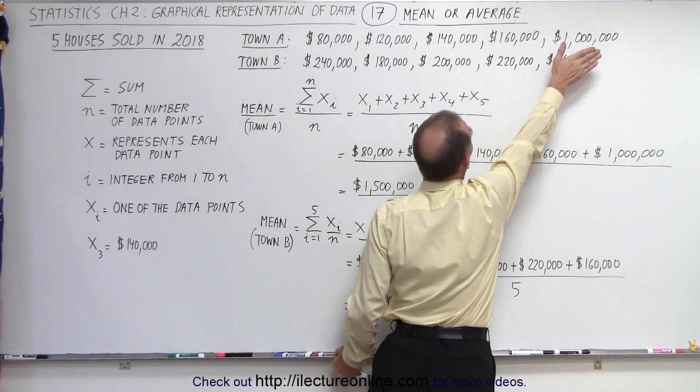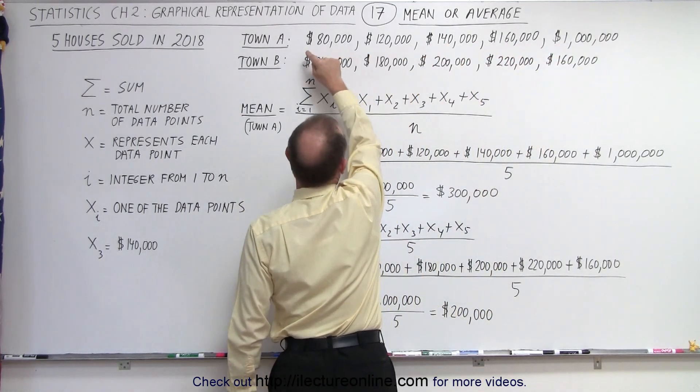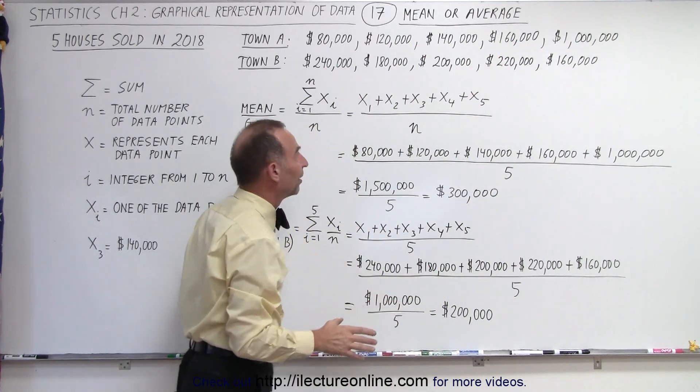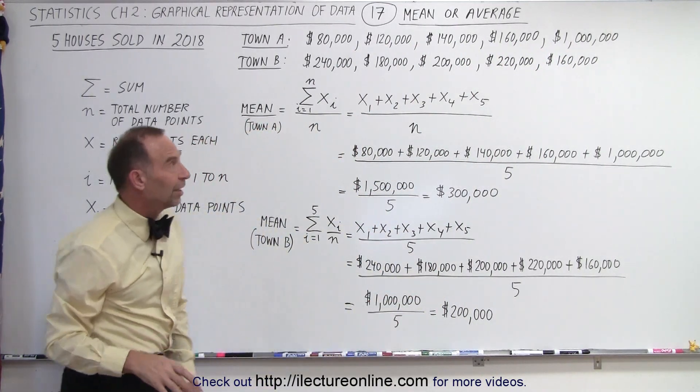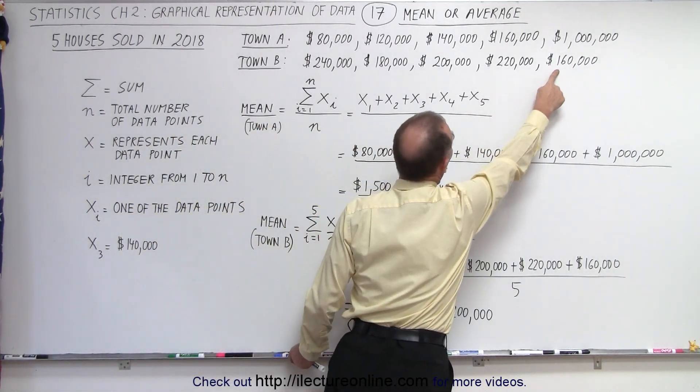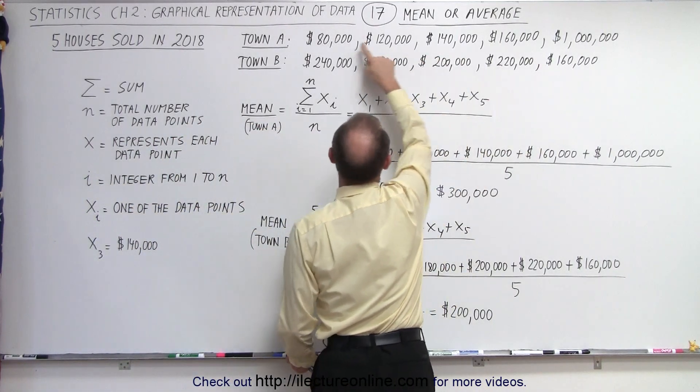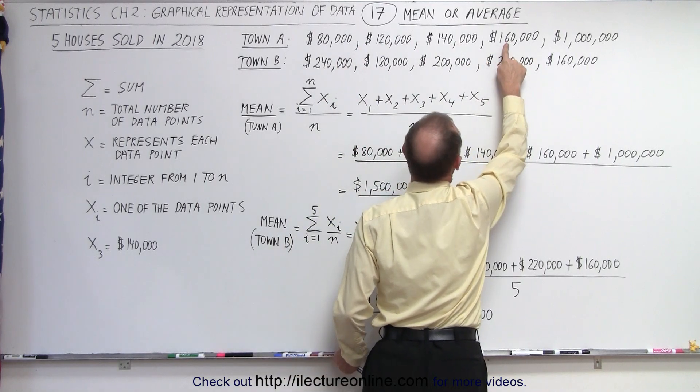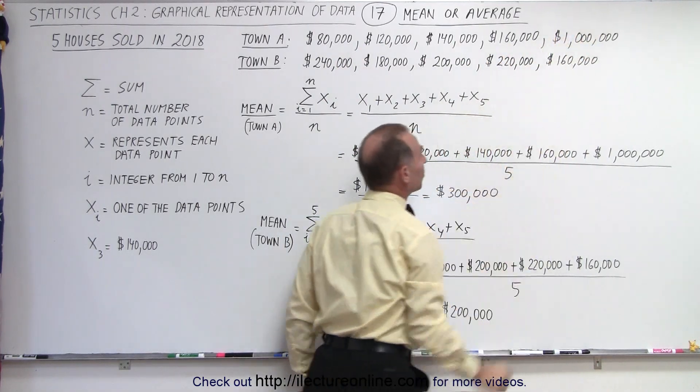If you exclude the $1 million house, notice that the average house price would be far less than the average house price in town B. And notice that the cheapest house price in town B was the most expensive house price in town A if we ignore that $1 million house.